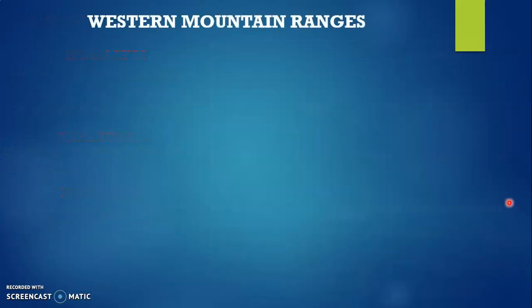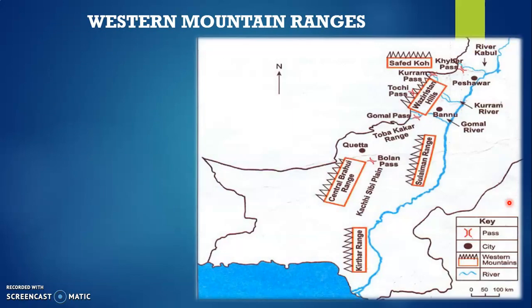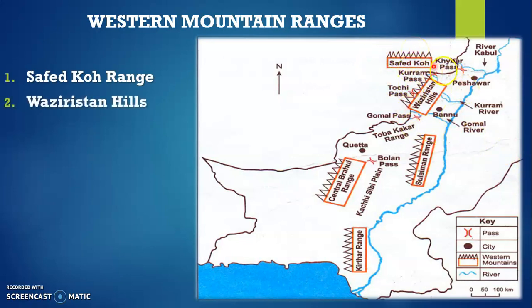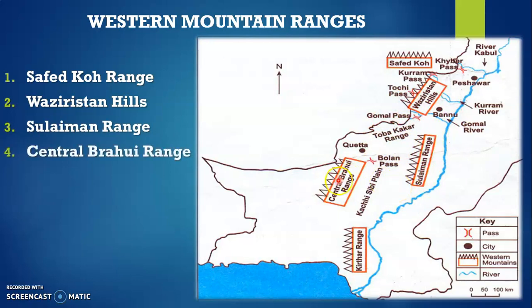Next we have the western mountain ranges — another topographic region. For the relief, the identified locations of the western mountain ranges are: number one, Safedkoh; number two, Waziristan Hills — you can see the highlighted areas in the boxes; number three, Suleiman Range; number four, Central Brahui Range; and number five, the Kirthar Range, which is on the western side of the Indus. These are all basically the western mountain ranges of Pakistan.